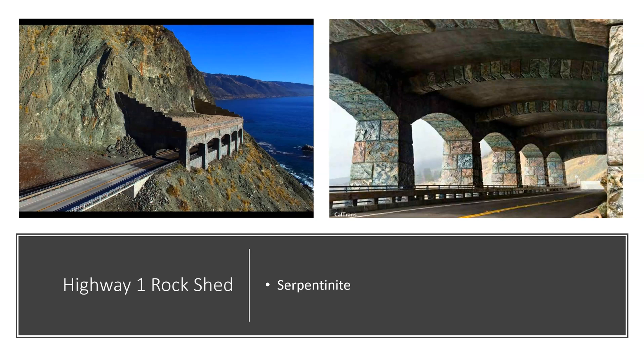Here are some images of serpentinite in the coast ranges. This is actually a rock shed helping to protect Highway 1 from the landslide activity that serpentinite exhibits. Metamorphic rocks, when their minerals align parallel to each other, become a nice slip surface for rocks to move on a slope. We often see metamorphic rocks fail in landslides and rock slides. Serpentinite continuously slips, so we see a lot of failure along Highway 1, and this rock shed is protecting the highway from serpentinite eroding off the hill.